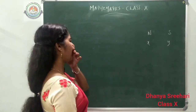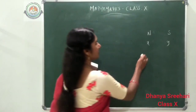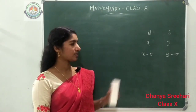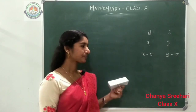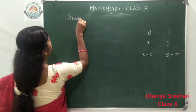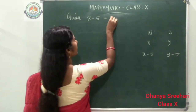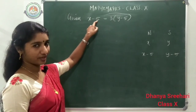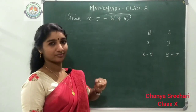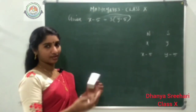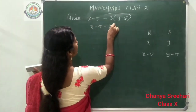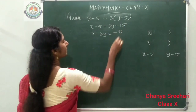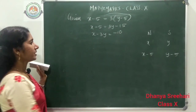Five years ago: x minus 5 equals 3 times (y minus 5), which gives x minus 5 equals 3y minus 15. Writing in standard form: x minus 3y equals minus 10. We got the first equation. One equation is not enough to solve for x and y, so we need one more sentence from the problem. Ten years later, Nuri's age will be twice Sonu's age, meaning their ages become x plus 10 and y plus 10.